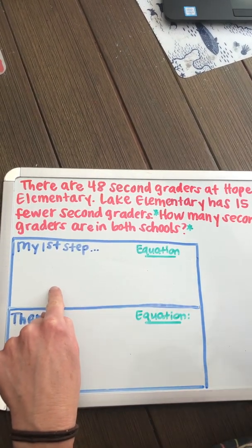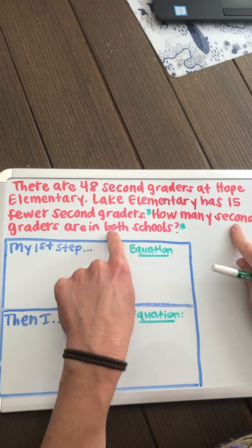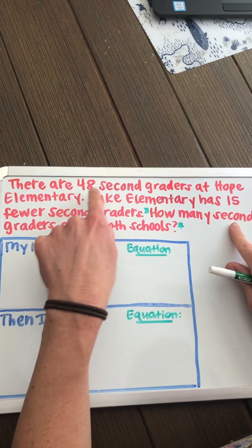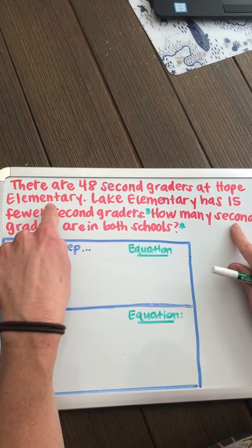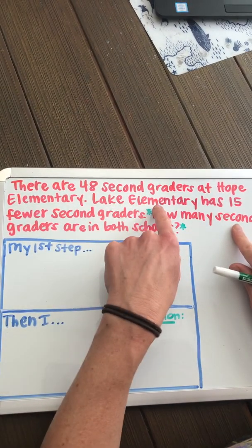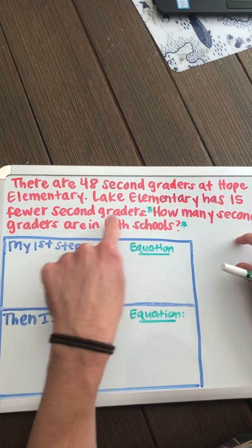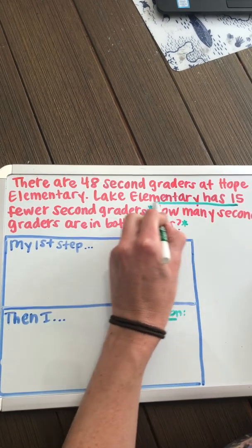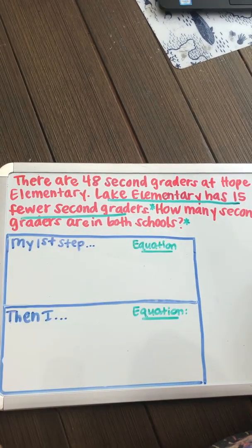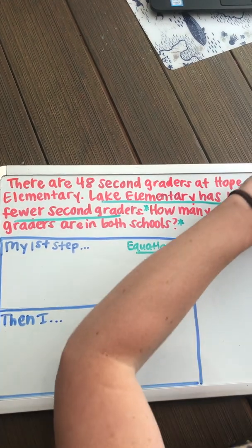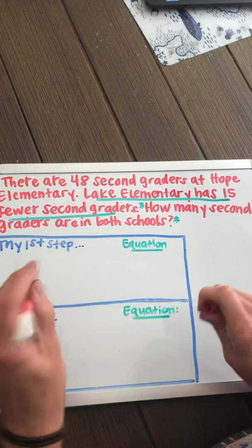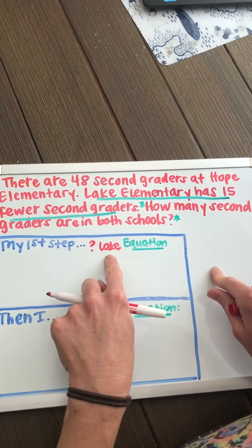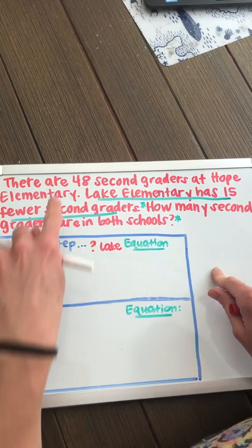So I need to think about my first step. If I want to know how many second graders are in both schools, let's see if I have the information that I need. I know that there are 48 second graders at Hope Elementary, but it tells me that Lake Elementary has 15 fewer second graders. I don't really know how many second graders Lake Elementary has. So I'm going to need my first step to be: how many second graders are at Lake Elementary?